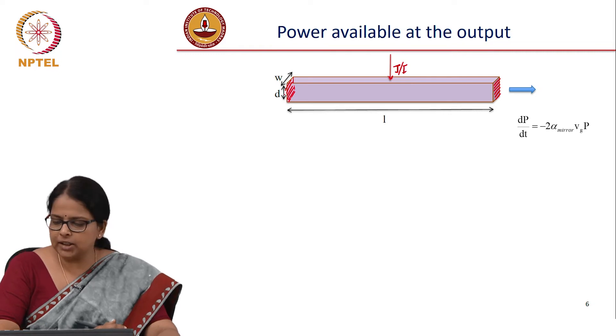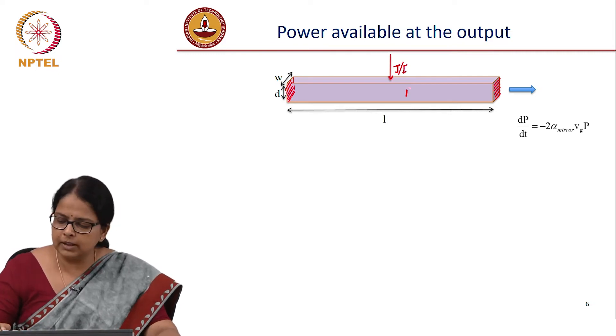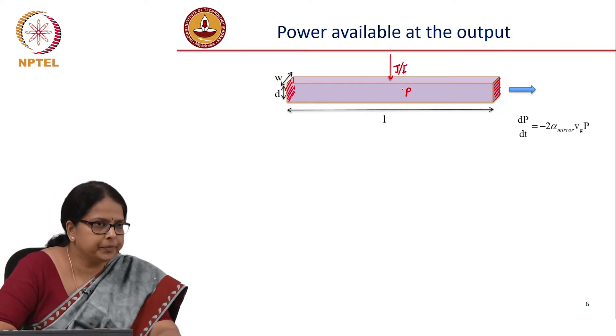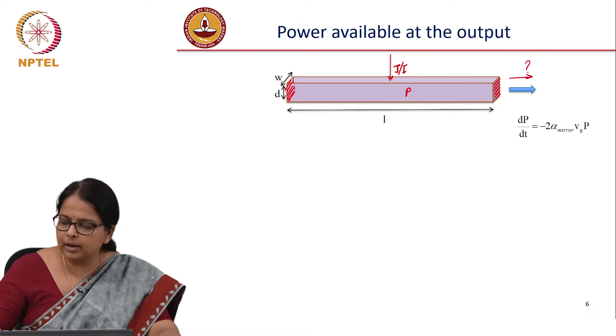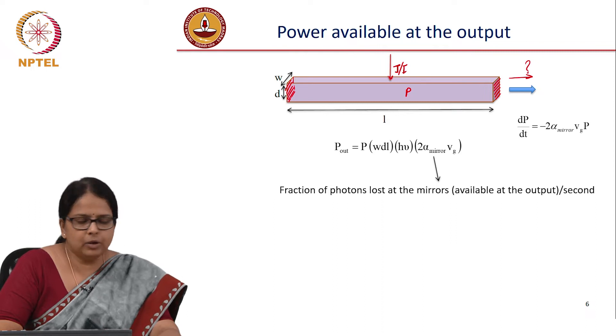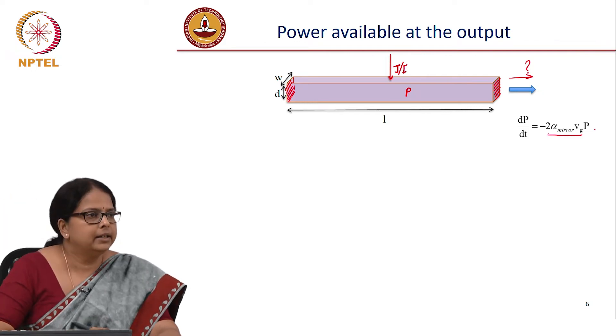As far as the loss is concerned, we want to know what is the photon generated inside the system, P per unit volume is what we know. What we want to know is what comes out of the system. And we know that what comes out of the system is proportional to minus 2α_Vg P, like how we had derived earlier.